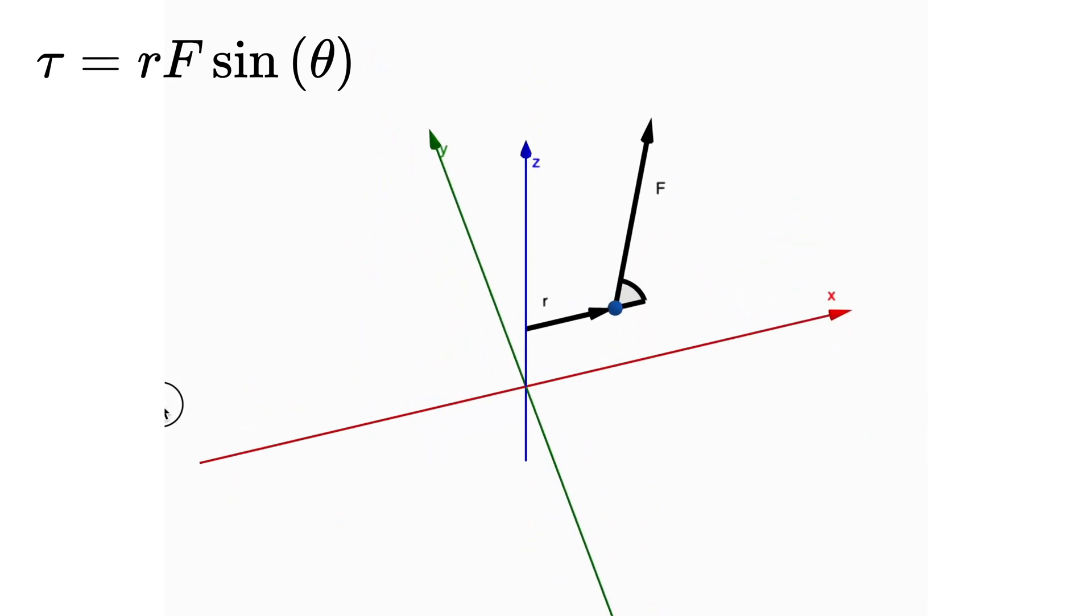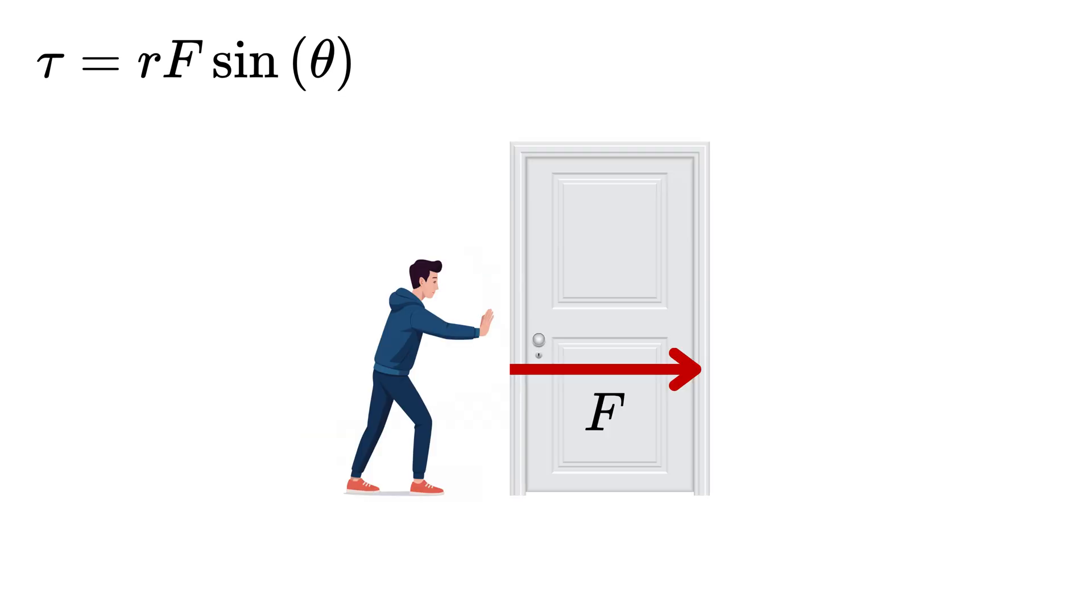Here, R is the length of the lever arm, F is the amount of force, and theta is the angle between them. If the force is applied exactly in the direction of the position vector or opposite to it, the sine of the angle becomes zero, and so the torque is also zero. That is why if you push directly at the hinge of the door, it doesn't rotate at all.